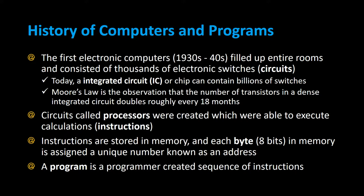Circuits called processors were created which were able to execute calculations or instructions, and these instructions are stored in memory. Each byte, which is 8 bits in memory, is assigned a unique number known as an address. A program is a programmer-created sequence of instructions.